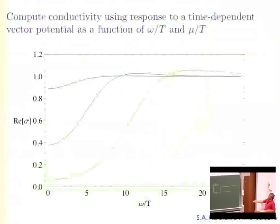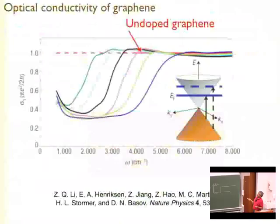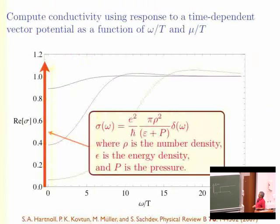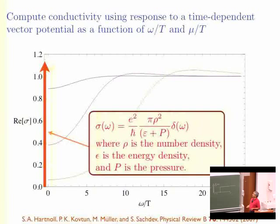The conductivity has some similarities: as you lower the temperature, it's constant at high frequency — that's good. It doesn't have a very sharp threshold; it comes in gradually as a power law, and that power law can be computed by looking at the near-horizon physics in the way Sean was discussing. That power law is clearly not present in the free CFT — it's a consequence of this horizon present in AdS2 even at zero temperature. Also, there's a delta function at zero frequency, which is indeed present when you use the AdS-CFT rules honestly.